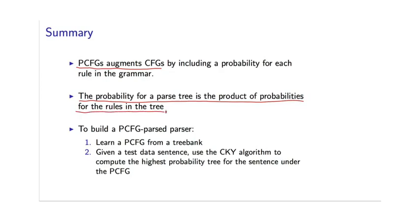To build a parser based on a PCFG, you go through the following steps. So firstly, you learn a PCFG from a tree bank. And as we saw, that's really quite trivial. We just read off the rules from the tree bank and then compute maximum likelihood estimates based on simple counts. And secondly, given a new test data sentence, we can use this dynamic programming algorithm, the CKY algorithm, to compute the highest probability tree for the sentence under the PCFG.